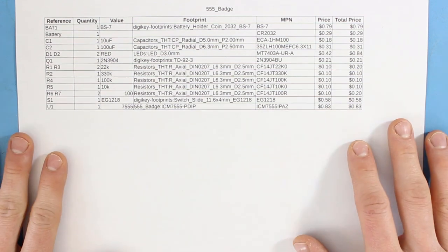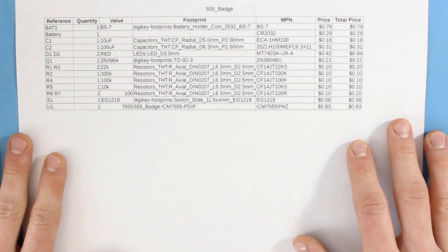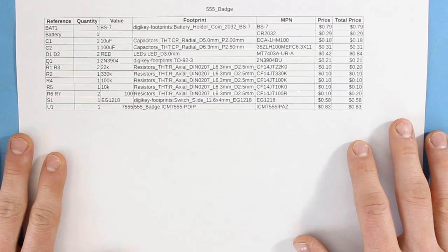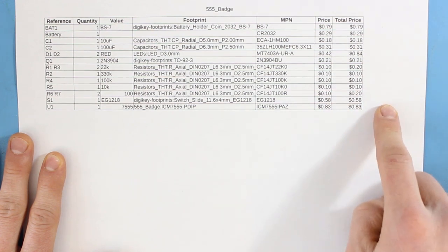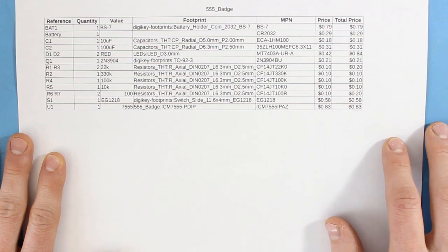We get to solder everything up and see if our badge works. The first thing I like to do is print out my bill of materials so I can use it as a reference while soldering. Notice that I printed mine without links to the product pages. We won't need them.